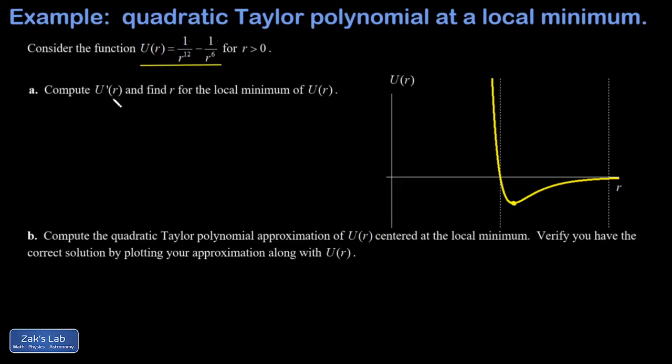In part A we're asked to compute u'(r) and find r for the local minimum. Using the power rule, the first term r^(−12) gives negative 12r^(−13), written as −12/r^13. The second term r^(−6) brings down a negative 6, making the term positive, and subtracting 1 from the exponent gives r^(−7), or 1/r^7. So that's u'(r).